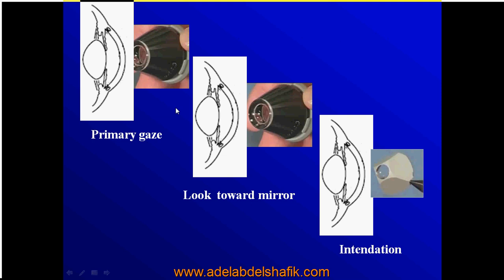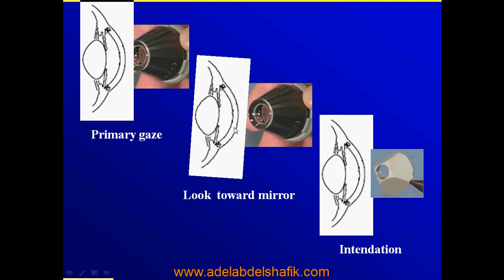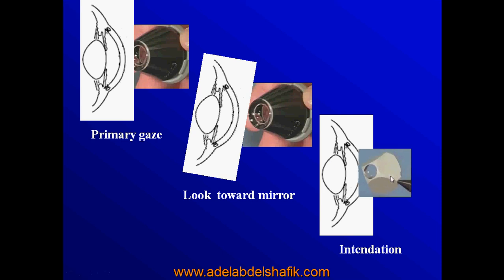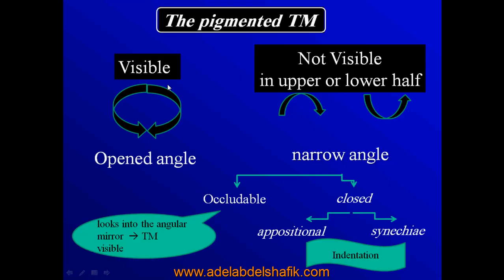So we have three things to do during gonioscopy: first, the patient looks in primary position; then we ask the patient to look toward the mirror if the trabecular meshwork was not visible; and we perform indentation if the trabecular meshwork is still not visible. The scheme is: trabecular meshwork seen up and down — open angle; trabecular meshwork not seen up or not seen down — narrow angle, which can be occludable or closed. Ask the patient to look toward the mirror: if trabecular meshwork details become visible, it is an occludable angle; if not, it is a closed angle, which can be appositional or synechial closure requiring indentation.